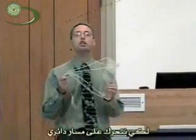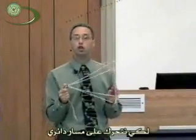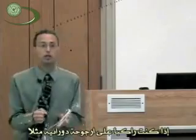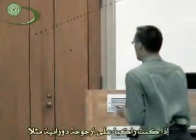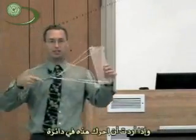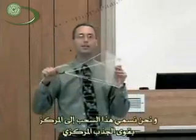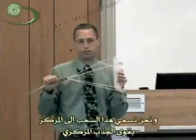Circular motion — to go in a circle, you have to be pulled towards the middle of that circle. So if you ride a merry-go-round, you're going around and you feel like you're going to be flying off to the side, because you're being pulled to the middle of the circle. That pulling towards the center is what we call centripetal force.